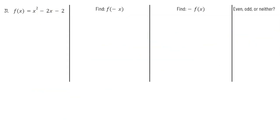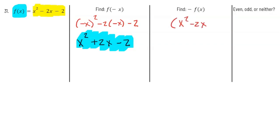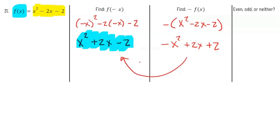Now let's check f(x) = x² - 2x - 2. Plugging in -x gives (-x)² - 2(-x) - 2 = x² + 2x - 2. That is not equal to f(x) = x² - 2x - 2, so it's not even. Then checking -f(x): distributing the negative gives -x² + 2x + 2, which is also not equal to f(-x) = x² + 2x - 2. Those are very different functions.